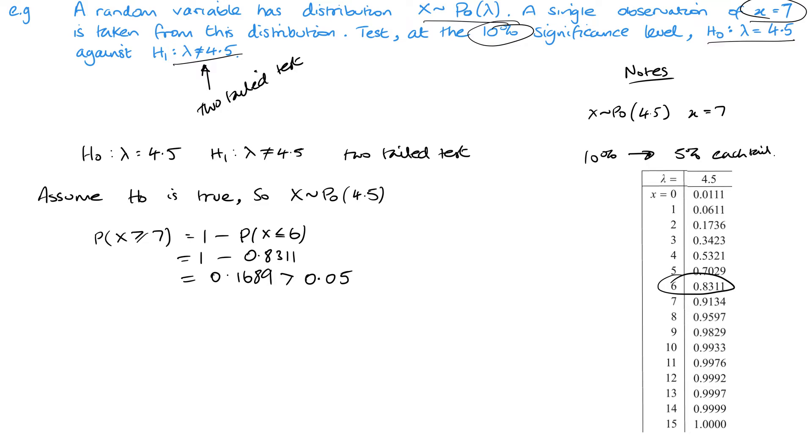So therefore we would say there is insufficient evidence to reject H0, and then your second sentence is where you would link it to the context of the question. And in this case we don't have any context, so I'll just put, you know, about lambda is 4.5. And that's the question complete.